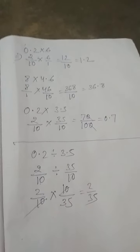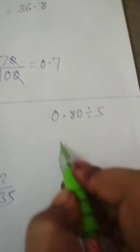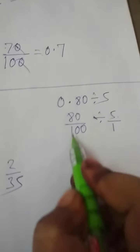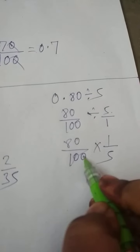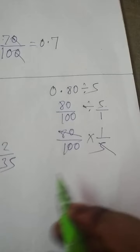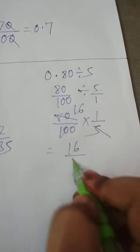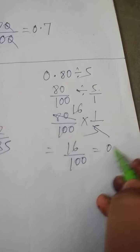First you have to just convert it into fractions. We will take more example: 0.80 divided by 5. 0.80 is 80 by 100, and 5 is 5 by 1. First remains the same, second will be reciprocal. 80 will cancel with 5 — so the answer will be 16 by 100, and 16 by 100 is 0.16. This is the process of division.